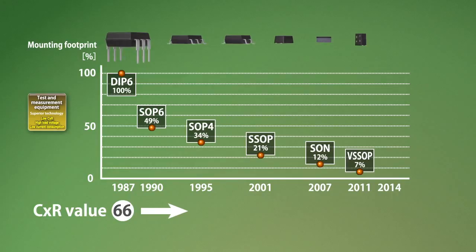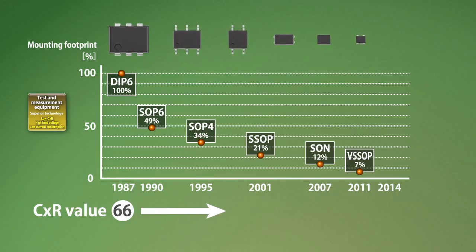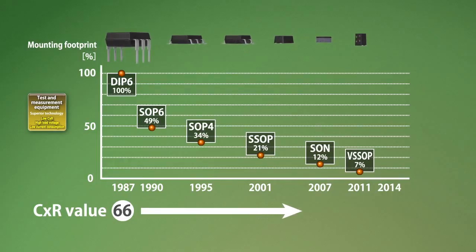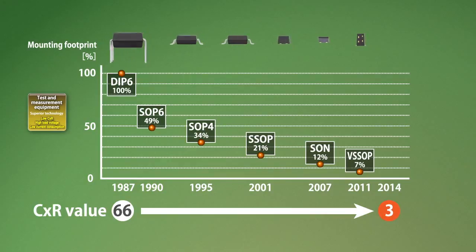To help improve the accuracy of measuring devices, Panasonic expanded the R×C series products with lower values for C (output capacitance) and lower values for R (on resistance). Soon, products with R×C value 3 will be available in VSSOP packages.